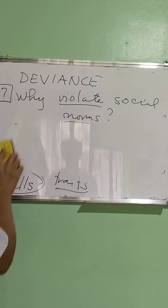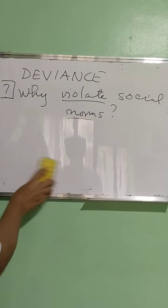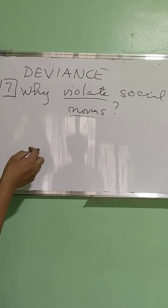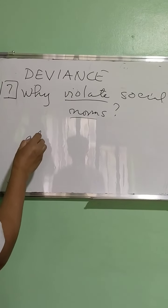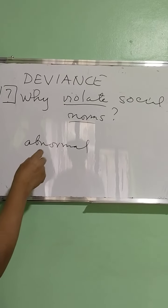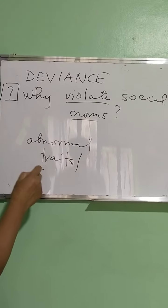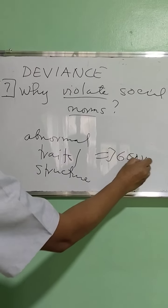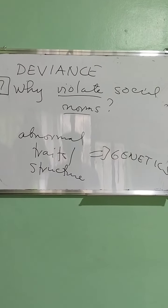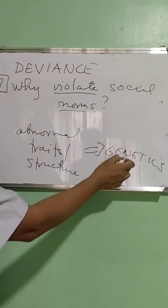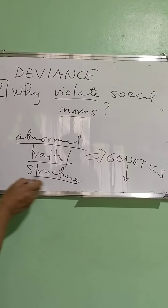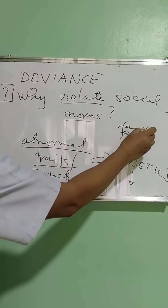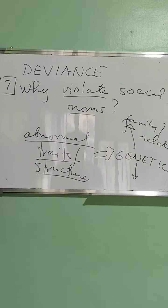Just like from the viewpoint of science, if somebody is having an abnormal trait or abnormal structure, we attribute that to genetics or heredity. Certain cells have been handed down from blood relatives and handed down to you. So the abnormality of traits or physical structure would come from your family or perhaps your relatives.